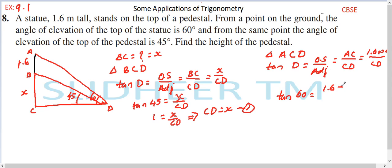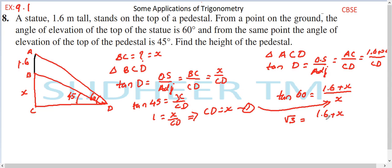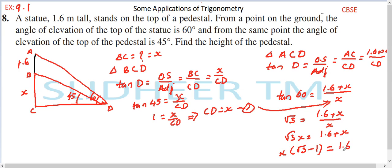So tan D equals 1.6 plus x divided by CD. From equation number one, CD equals x. So tan 60 equals 1.6 plus x divided by x. Since tan 60 equals root 3, we have root 3 equals 1.6 plus x over x. Cross multiplying gives x times root 3 equals 1.6 plus x, and rearranging gives x times (root 3 minus 1) equals 1.6.